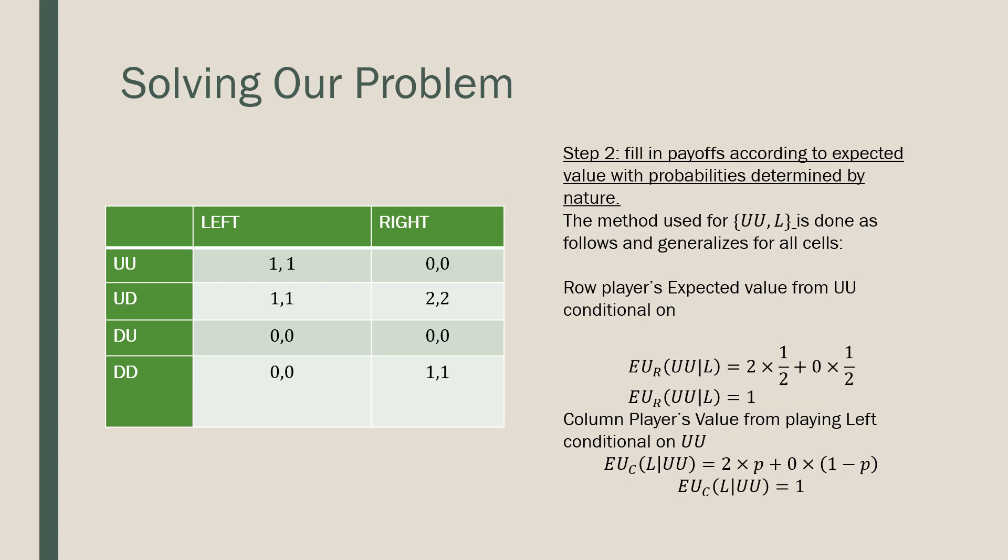So we're going to fill in our cells over here according to expected value. What I did is that I took the expected value for each cell and each payoff there. So I'm just going to show what I did for this top left cell here. That was basically me just taking a conditional expectation or expected utility of our row player contingent on there being left, and it's going to be in one of two different games. So that's where we have our probabilities over here. And for our column player, we're going to follow the same process. P here is just our probability assigned by nature. That's what we get our numbers 1,1, 1,1, and all that other stuff here.